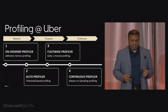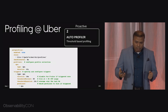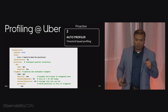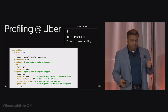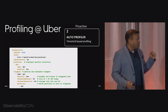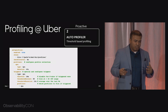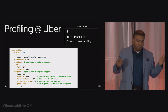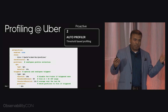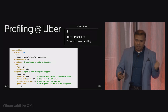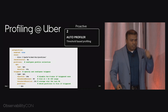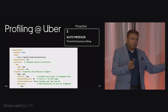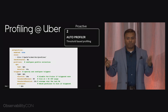The second thing we did was add an auto profiler. This is essentially threshold-based profiling. You can say that whenever your CPU usage goes over a certain percentage — 80%, for example — you want an automated CPU profile. So it gives you a proactive profile, but you only get profiles in the moment. You don't see what happened before.